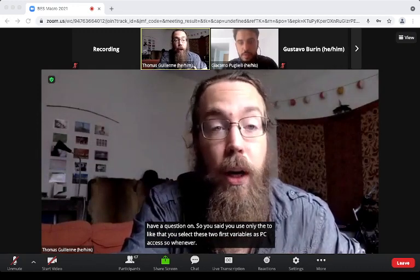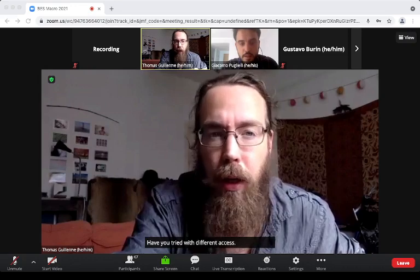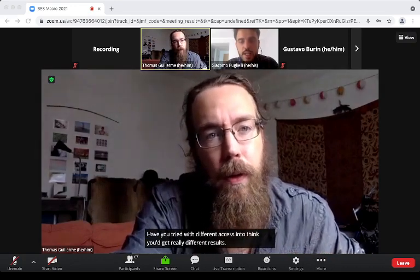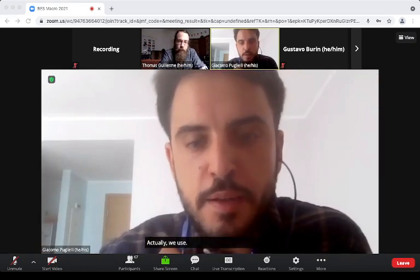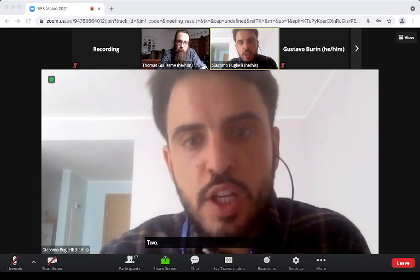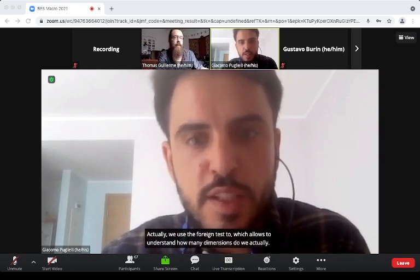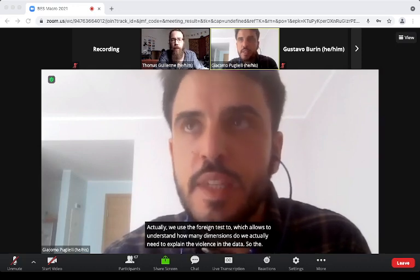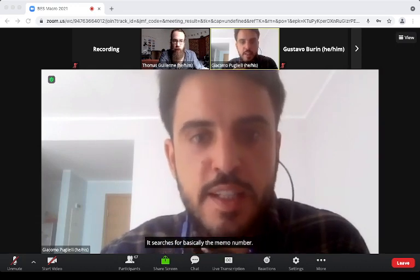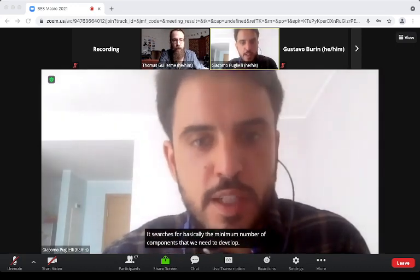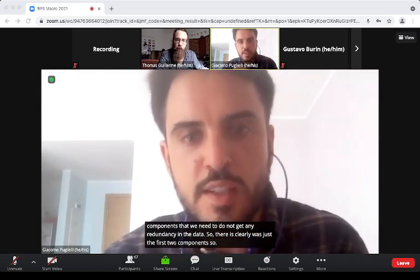You said you used only the two first variables as PC axes or whatever. Do you get really different results if you tried with different axes? Actually, we use the parallel test, which allows us to understand how many dimensions we actually need to explain the variance in the data. It searches for basically the minimum number of components that we need to not get any redundancy in the data. The results clearly showed it was just the first two components.